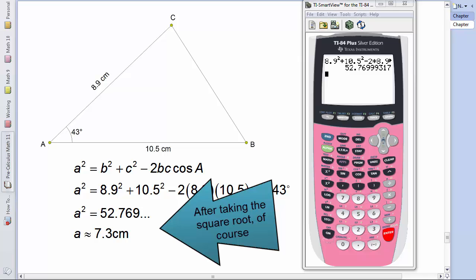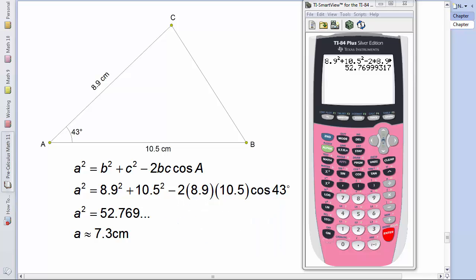Now, if we wanted to find the other angles of this triangle, we could use the sine law. Or, since we know all the side lengths of this triangle, we could also use the cosine law. Now, normally I would only use the cosine law to find an angle if all that I knew was the three side lengths and no angles. But I'll use it in this case as a demonstration.